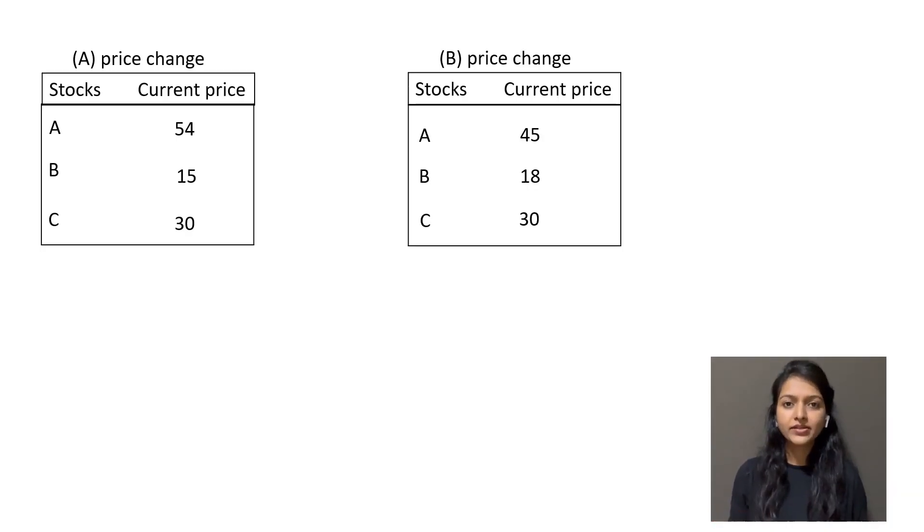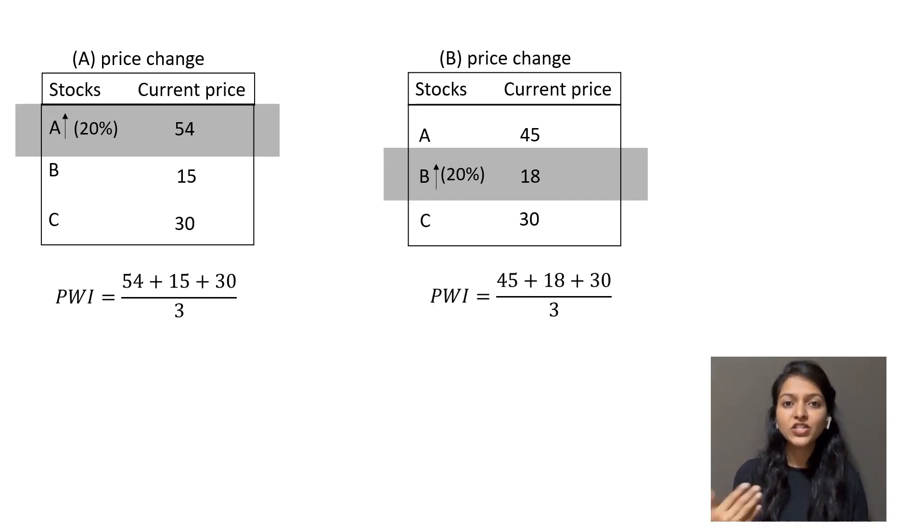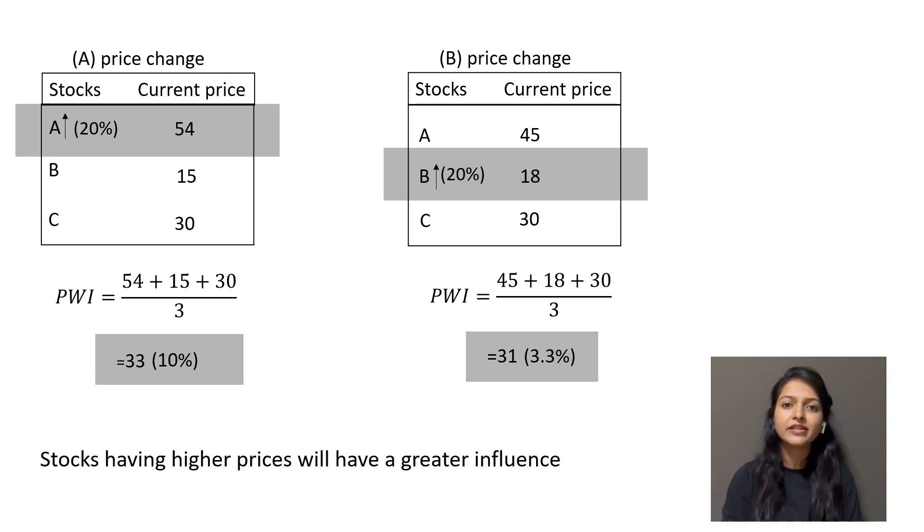What we need to understand here is that A and B both increased by 20%, but the percentage increase in the index value was not the same for both. The reason is A has the highest share price amongst all three stocks, and the stocks having higher prices will have a greater influence on the index.